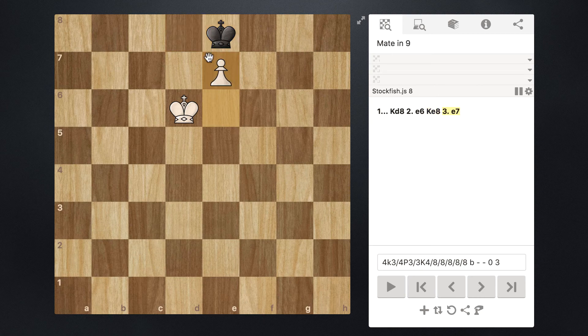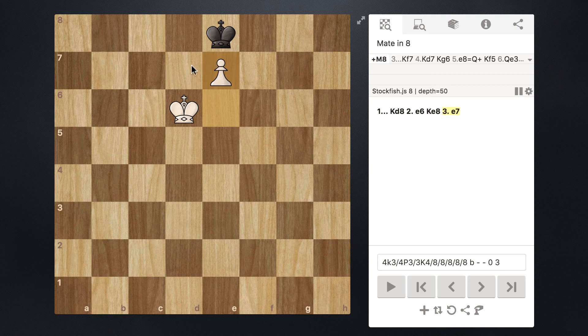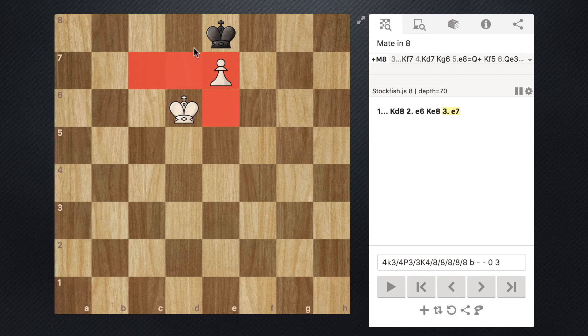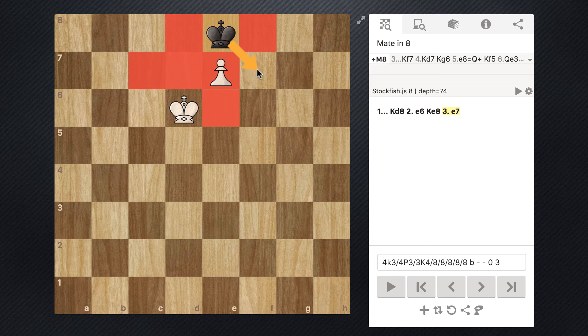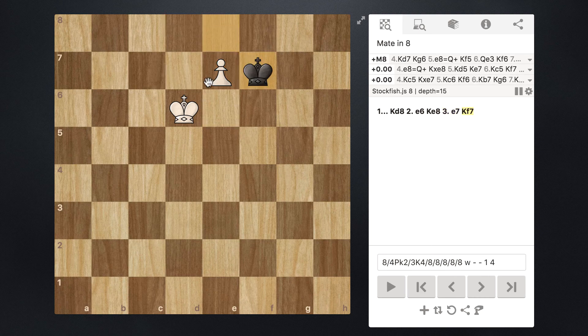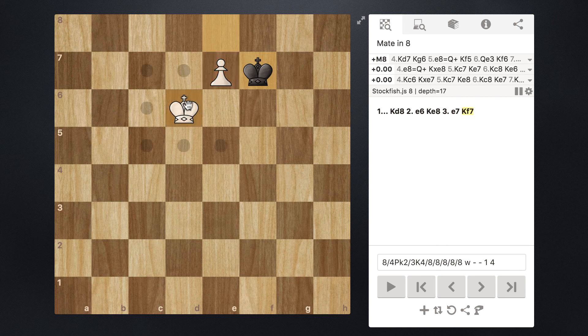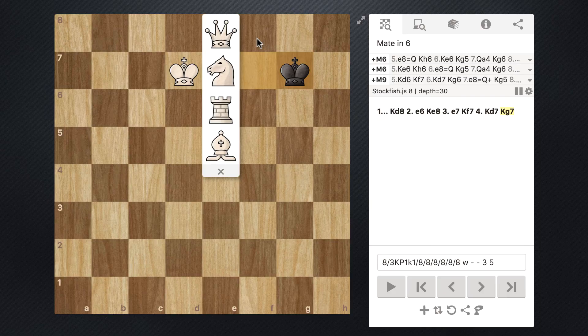Our king controls these squares. Our pawn controls these squares. So the enemy king is forced to move in this example to f7. So when they move to f7, before we promote, we just bring our king up. And it really doesn't matter what they do. We promote.